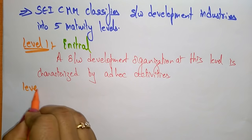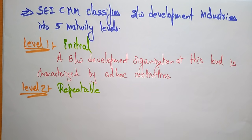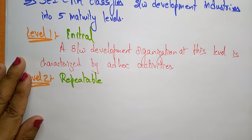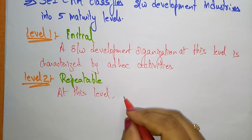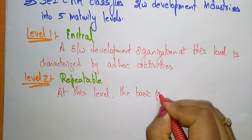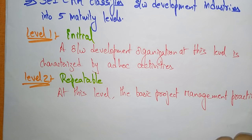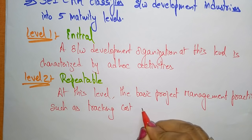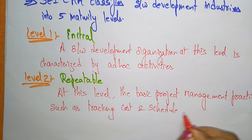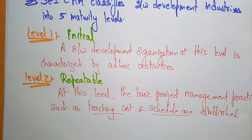Level two is called Repeatability. If your organization is at the Repeatable level, it is indicated as CMM level two. At this level, the basic project management practices such as tracking cost and schedule, or establishing them, are considered. If your organization is related to tracking cost and schedule on a basic level, then it will be indicated as level two.